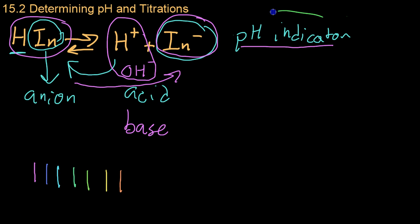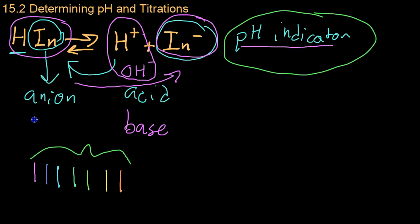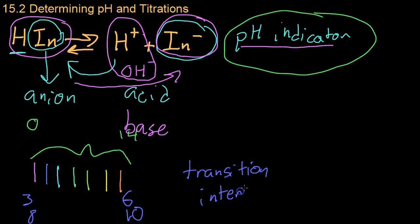It should be noted, however, that pH indicators only work within a certain range. Odds are the pH indicator doesn't work all the way from 0 to 14. More than likely, it works within a specific range. So if it's used as an acid indicator, this may be 3 to 6, or if it's a base indicator, this may be 8 to 10. Indicators only work within what's called their transition interval — basically the pH range in which a noticeable color change takes place.